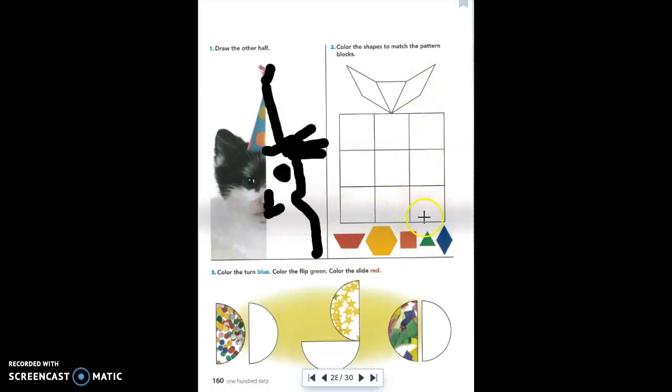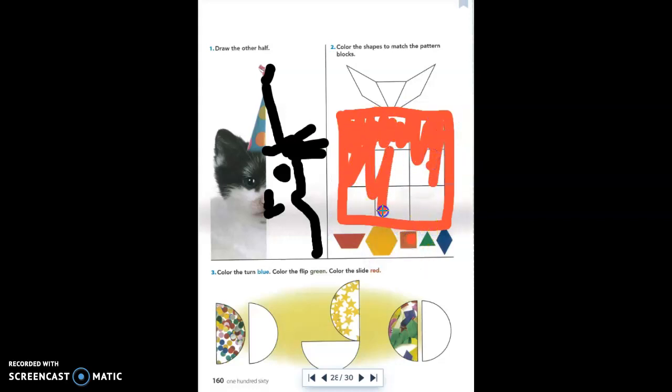So here on this activity, we're just going to look at the shapes here and color them to match the pattern blocks that they've given you. So even though you don't have pattern blocks, you can still do this. Again, I don't have an orange. I have to modify. So all these shapes here, the squares, are orange. So I'm going to color them with my semi-orange crayon because all of these are square and they match the square pattern block. So there's my coloring of that.